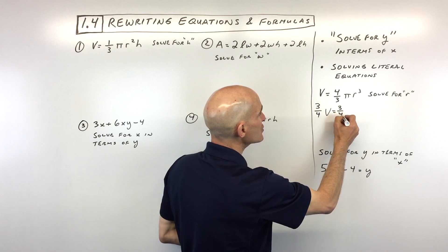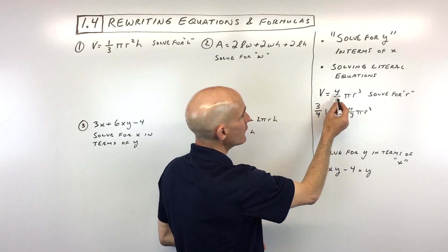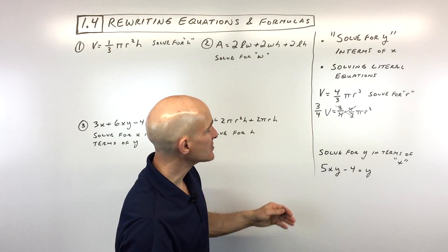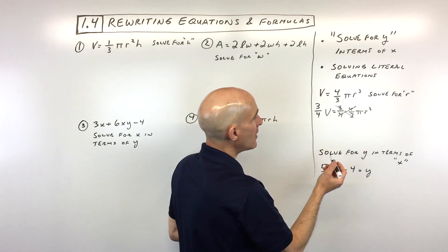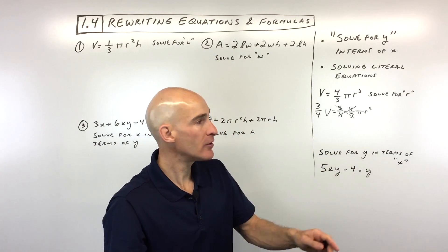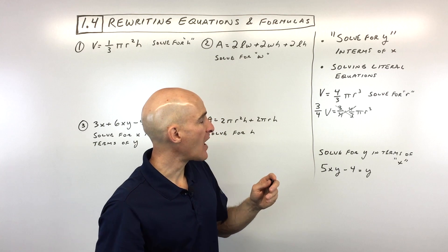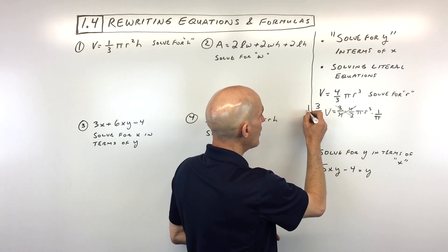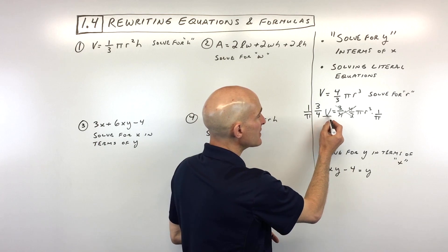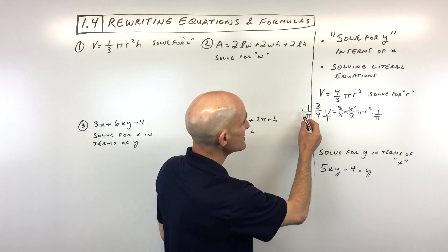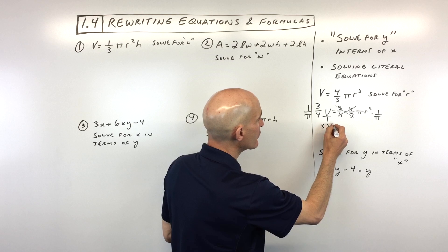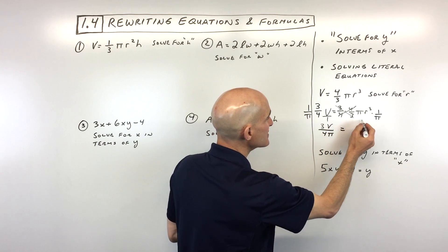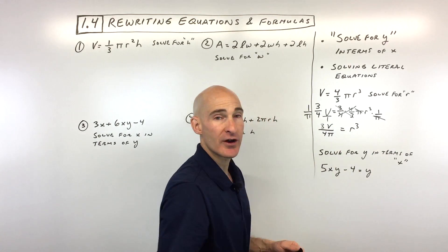Multiplying by three-fourths means the four-thirds and three-fourths cancel — numerator and denominator — and we do it to both sides to keep the equation balanced. Next, we need to get rid of pi, since pi and r are multiplied together. We multiply by one over pi, writing V as V over one to help things line up. Multiplying numerators gives 3V, and denominators give 4π — so the pi terms cancel, leaving r cubed.